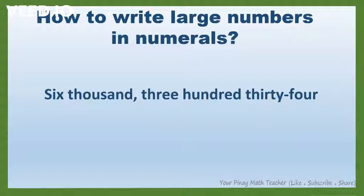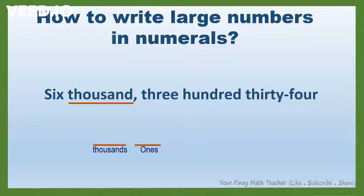In this number, the highest period is thousands. It follows that we have two groups of digits or two periods: the thousands and the ones period. The highest period may have three digits, two digits, or one digit. But the ones or the following period should have three digits.